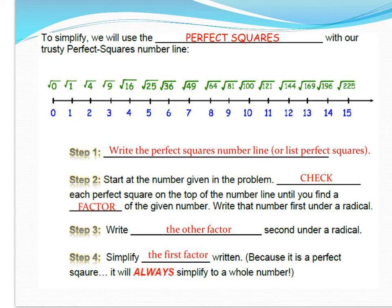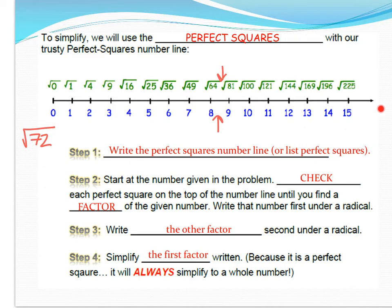Take for example the square root of 72. It's not on our number line — it lies between 64 and 81, so between 8 and 9. Step one: write your list of perfect squares. On your homework you can refer to this; on your mastery check, remember them. A good way is to list zero through 10 and compute each squared. Step two: start at 72 and locate it between 64 and 81 on the number line.